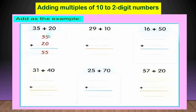we begin with the ones: 5 plus 0 equal 5. we know that any number plus 0 equals the same number. ثم 3 tens plus 2 tens equal 5 tens. يبقى الانسر بتاعي طلع 55.